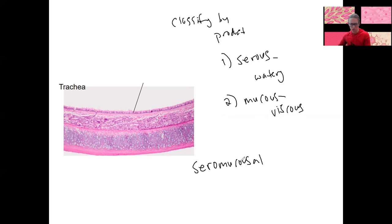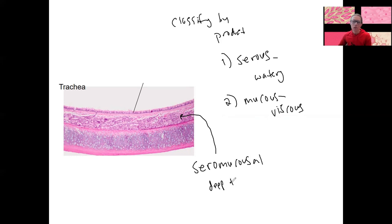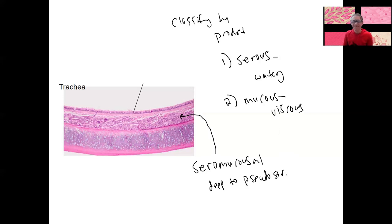Seromucosal is a common type. These are seromucosal glands that are deep to the pseudostratified columnar epithelium, also deep to some areolar tissue. So we'll see this type of gland as well — the stuff they produce is a combination of watery and viscous fluids.